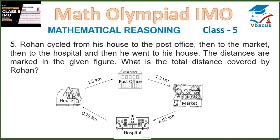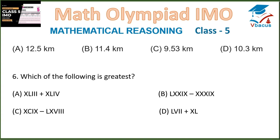Question 5. Rohan cycled from his house to the post office, then to the market, then to the hospital, and then back to the house. The distances are: house to post office 1.6 km, post office to market 1.3 km, market to hospital 6.65 km, and hospital to house 0.75 km. If we add them, the total distance is 10.30 kilometers. That is option D, which is the correct option.